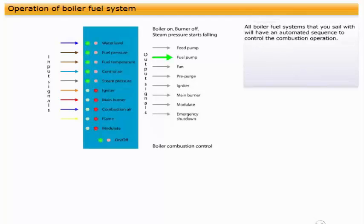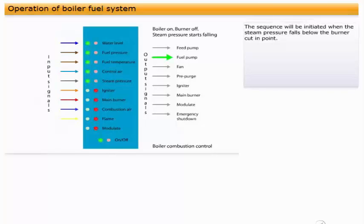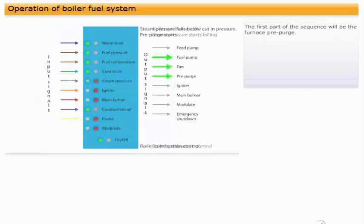All boiler fuel systems that you sail with will have an automated sequence to control the combustion operation. A typical combustion control sequence will have the following basic elements. The sequence will be initiated when the steam pressure falls below the burner cut-in point. The first part of the sequence will be the furnace pre-purge.